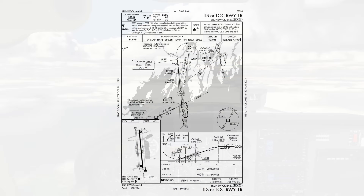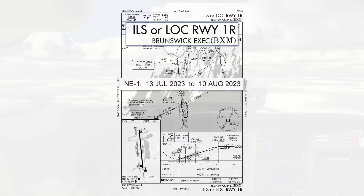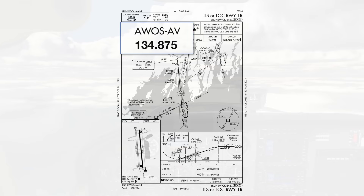So we pull up the approach plate. We'll brief this approach chronologically, starting by confirming that we're looking at the approach plate for the procedure we were told to expect — the ILS to 1 right at Brunswick — and that the plate is current. The first thing we'll do on the procedure, which we already did, was get the weather. That was on the AWOS at 134.87, so if we didn't get it before, now would be a good time.